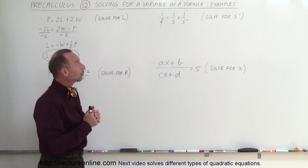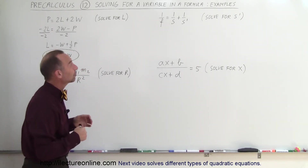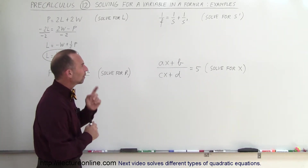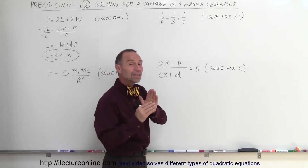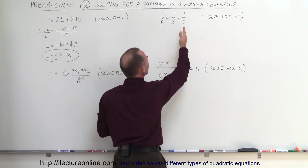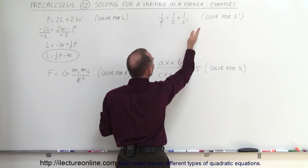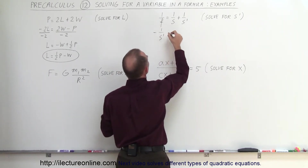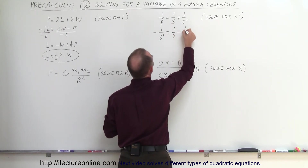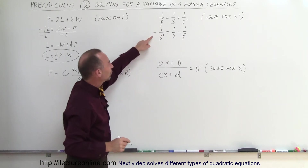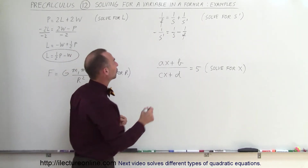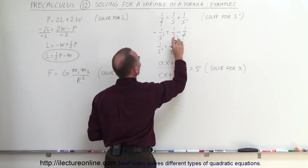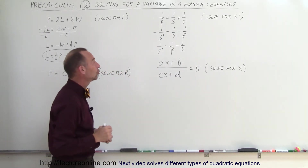On the next one, we have 1/F equals 1/S plus 1/S prime, and we're supposed to solve for S prime — that's an equation used with lenses and mirrors. To solve for S prime, I first move that term to one side: 1/S prime becomes negative, equaling 1/S minus 1/F. Then I multiply both sides by negative 1, so 1/S prime equals 1/F minus 1/S, which just switches the two terms around.